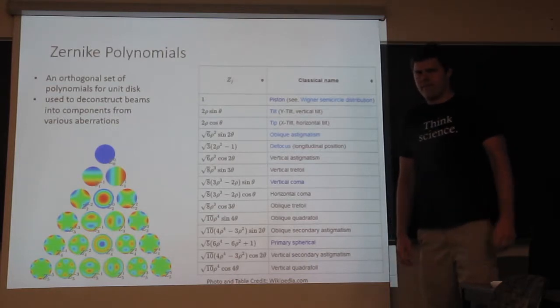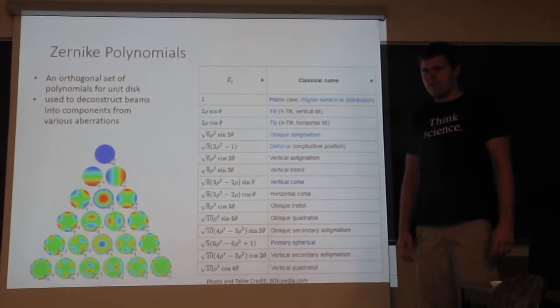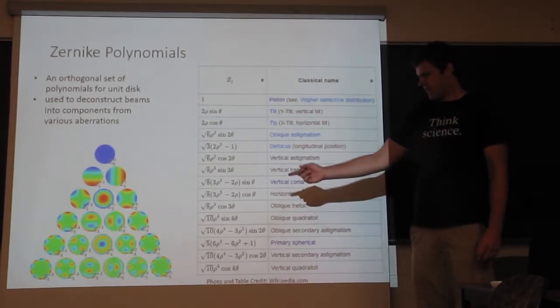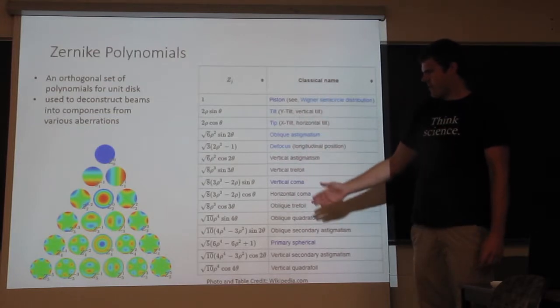So first off, if you're unfamiliar with the Zernike polynomials, they're an orthogonal set of polynomials for the unit disc. So you can see some of their profiles over here. There's a list of some of the polynomials.